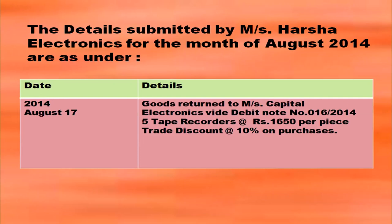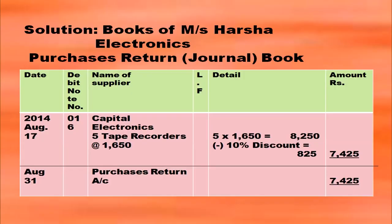Here is a question: Messrs Harsha Electronics has returned some goods to Messrs Capital Electronics — 5 tape recorders at rupees 1,650 per piece with trade discount at 10 percent. To write the purchase returns book: heading 'Books of Messrs Harsha Electronics' and 'Purchases Returns Journal'. Then with date, debit note number column. Year 2014, then month and then date. Debit note number you have to write.